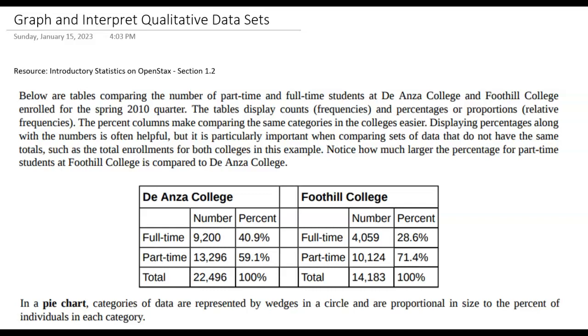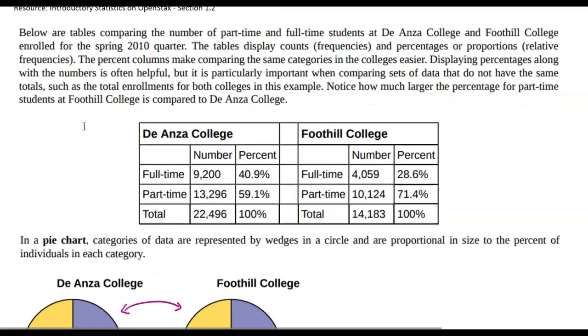In this video, we're going to be looking at how to graph and interpret qualitative data sets. Below are tables comparing the number of part-time and full-time students at two colleges in the spring 2010 quarter. The tables display their counts, which is the frequencies, but then also the percentages or the proportions, which we call the relative frequencies. We call these tables frequency tables.